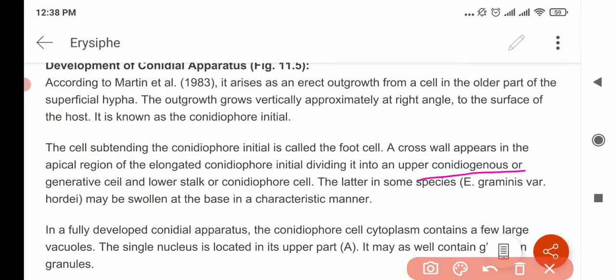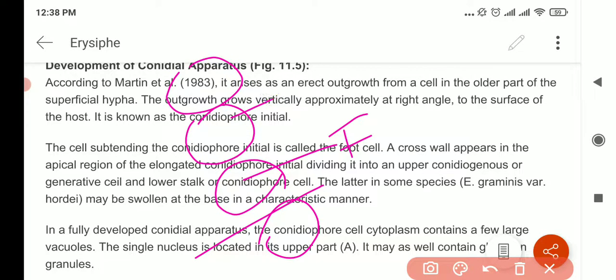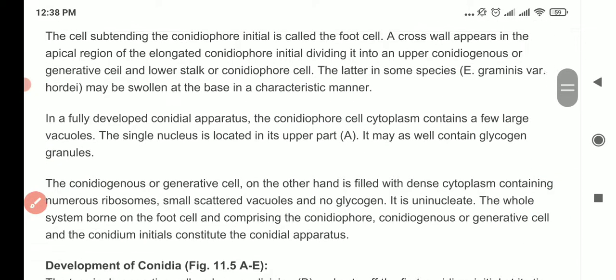Then you have upper conidium or generative cell and lower stalk cell. So you have this initial, then the foot, then you have the stalk cell and the generative cell. So they just keep arranging like that, one on top of the other.